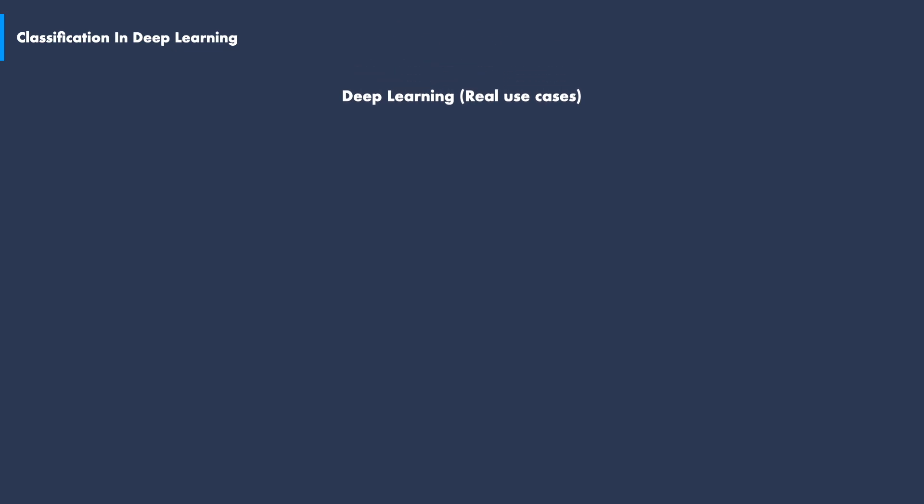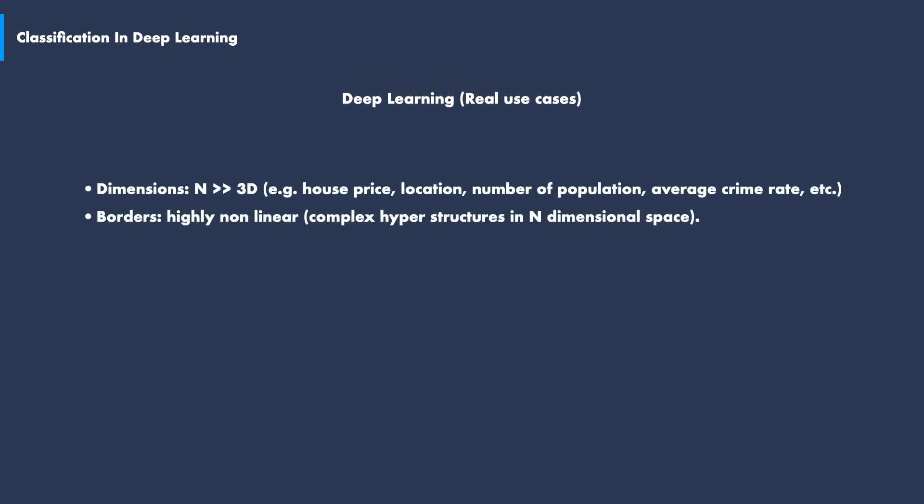In reality, classifications in deep learning is way more complex than the presented examples. Datasets are rarely two or three columns, rather in the hundreds or even thousands of columns. As such, data classes can live in much higher dimensions with highly non-linear boundaries.